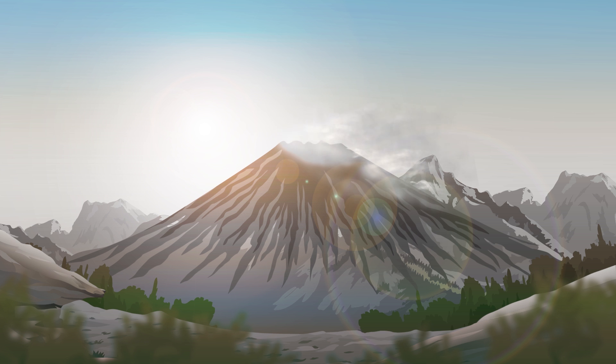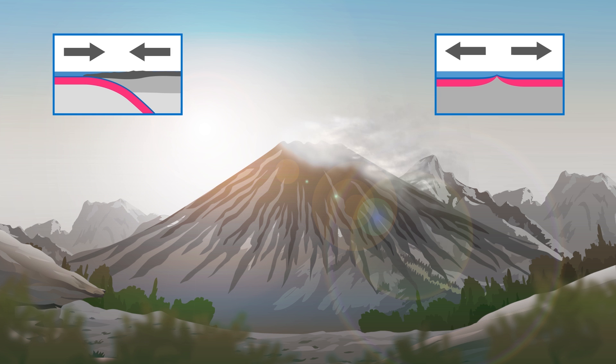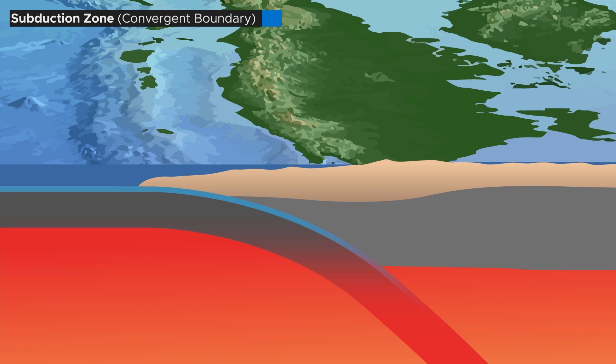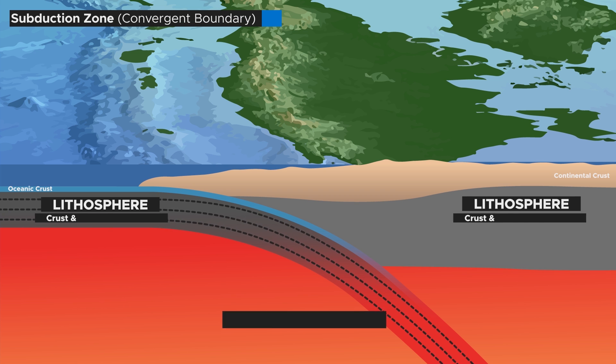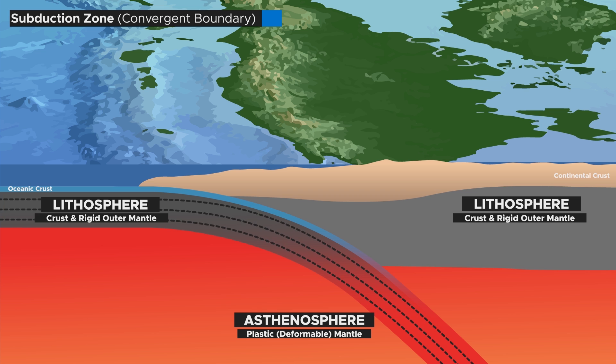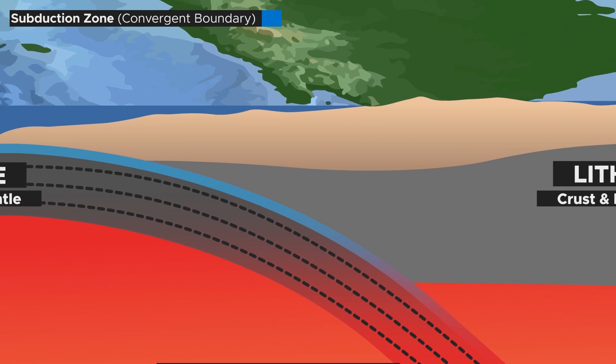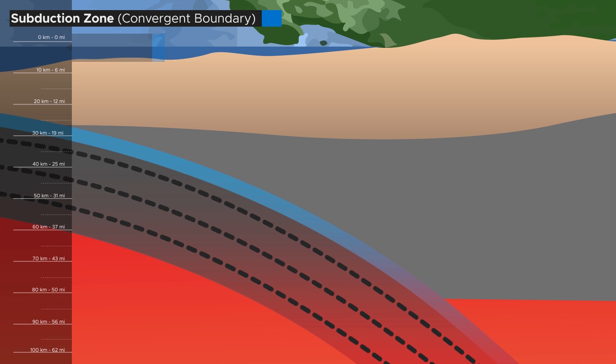Almost all volcanoes on Earth are the result of tectonic processes and are formed either by two colliding plates or two plates drifting apart. Subduction zones are convergent boundaries where the edge of one plate, usually a denser oceanic one, is forced under the edge of a less dense plate and then pushed into the mantle. During the subduction, the down-going plate experiences increasing pressure and temperature.